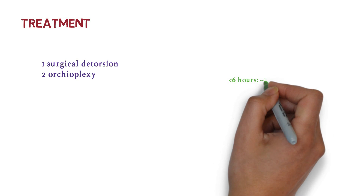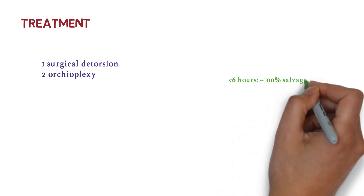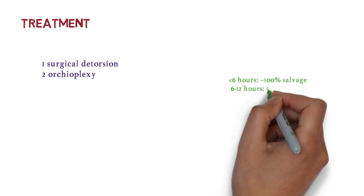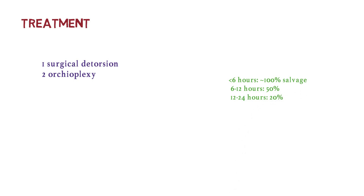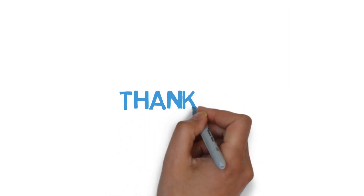The likelihood of testicular salvage is directly related to the time between onset and detorsion. If treated within six hours, salvage is nearly 100 percent. Between 6 to 12 hours, salvage drops to about 50 percent, and between 12 to 24 hours it falls to about 20 percent. Testicular torsion is a pediatric emergency and must be treated as soon as possible.